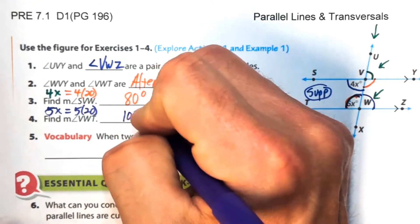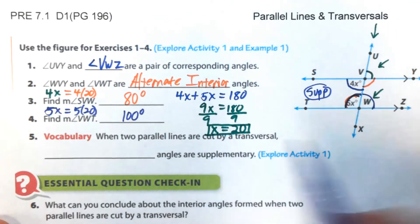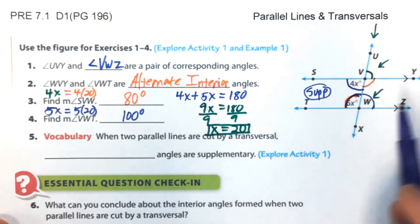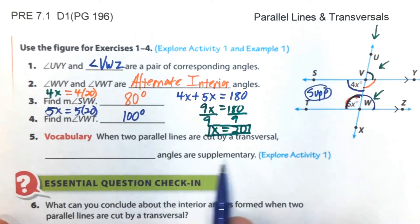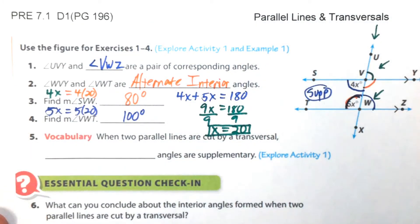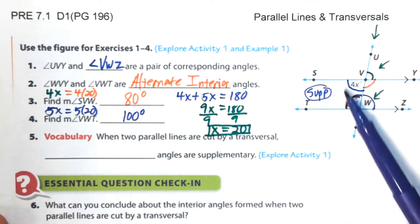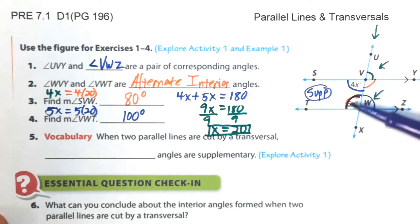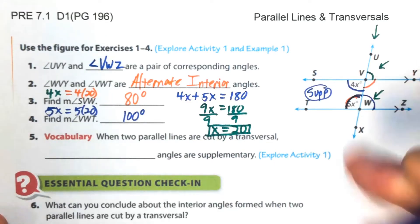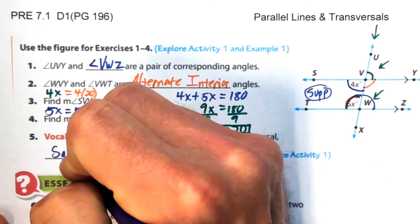Number 5 vocabulary: When two parallel lines are cut by a transversal, which angles are supplementary? The two angles that are supplementary are on the same side of the transversal and interior to the parallel lines — same-side interior angles.